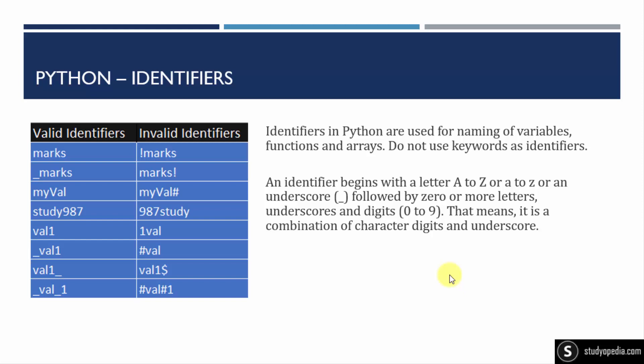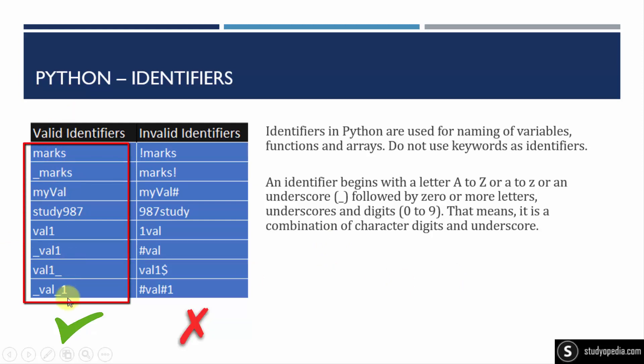We can use var, val, vl, a, b, c, i, j, k as identifiers. Identifiers have some rules: they should begin with a letter — from a to z, whether small caps or large caps — or they can also begin with an underscore, followed by zero or more letters. These are the valid identifiers, so you can use all of these as variable names as well as function names.